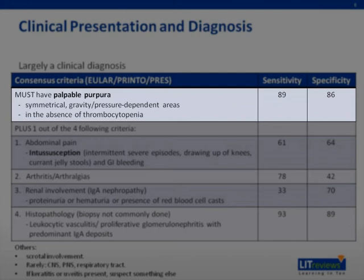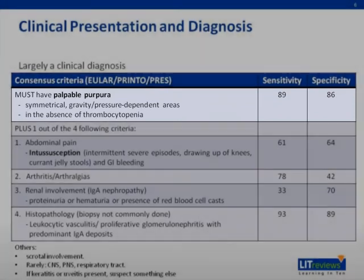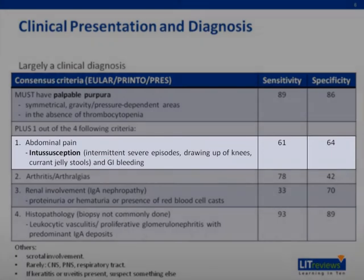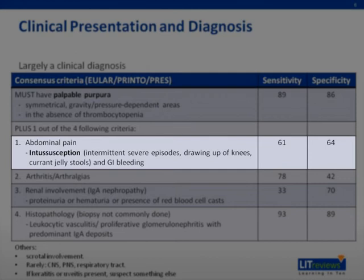The most important clinical finding is palpable purpura in the absence of thrombocytopenia. This rash tends to present symmetrically on dependent areas of the body, such as the lower limbs and buttocks. Abdominal pain is another common feature. In particular, we worry about intussusception, which presents as intermittent episodes of severe abdominal pain relieved by the drawing up of the knee. A late sign of intussusception is the passing of current jelly stools.